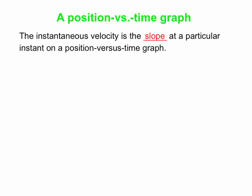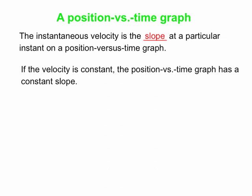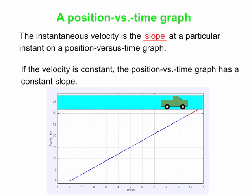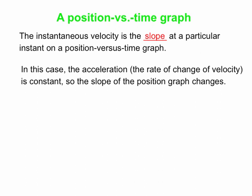The slope of the position versus time graph tells us the instantaneous velocity. For constant velocity, the slope of the position versus time graph is constant. Here we have a truck traveling at constant speed — covering 30 meters in 10 seconds — so the velocity is in the positive direction with a value of 30 meters divided by 10 seconds, which is +3 meters per second.